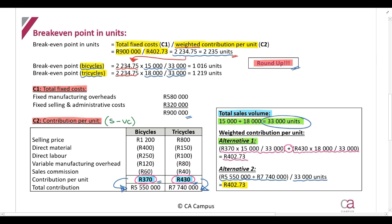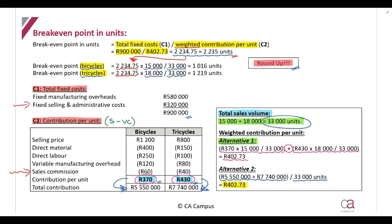Two common mistakes to discuss: First, students often exclude period costs from the calculation. Period costs — like selling and admin costs and sales commission — are not included in inventory values. But think logically: the break-even point is where the company makes neither profit nor loss. Any expenses affecting profit or loss must be included. So you must account for both product costs and period costs.